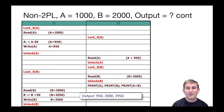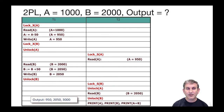Meanwhile, by unlocking B, T1 can continue. It reads B, sees 2000, adds 50 to make it 2050, and writes B so B is 2050. The next schedule is a two-phase locking schedule — not a strict two-phase locking schedule, just a regular two-phase locking schedule.